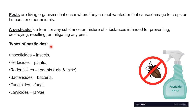There are different types of pesticides. Insecticides act against insects. Herbicides are compounds that act against unwanted plants. Rodenticides act against rodents — rats and mice. Bactericides act against bacteria. Fungicides act against fungi. Larvicides are compounds that act against the larval stage of any pest or insect.